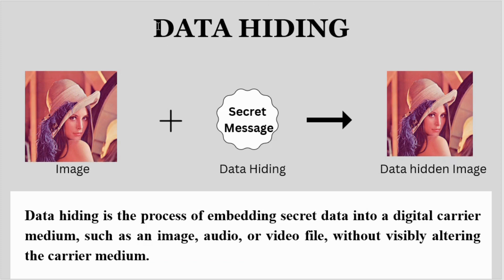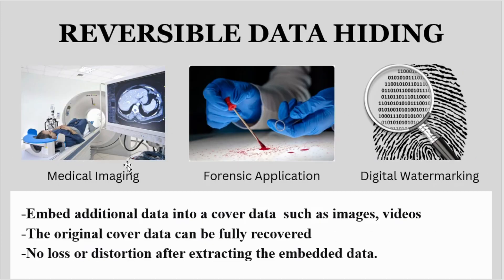Starting from: what is data hiding? Data hiding is a process of embedding secret data into a digital medium like images, videos, audios, etc., such that no change is visible and the image looks the same as before. For applications such as medical imaging and forensic applications, where integrity of the original data is equally important, the need for reversible data hiding came into the picture.